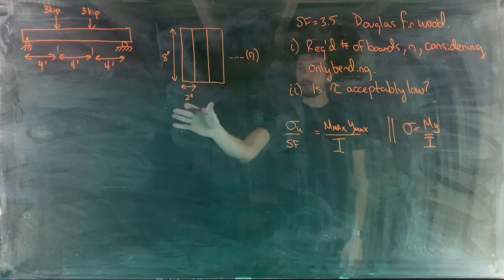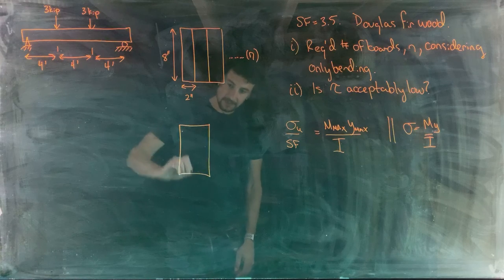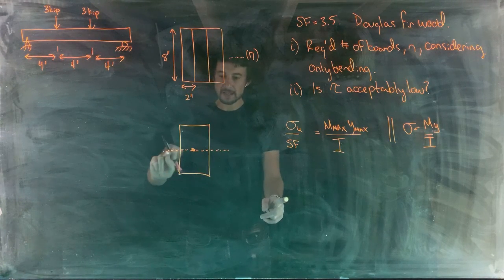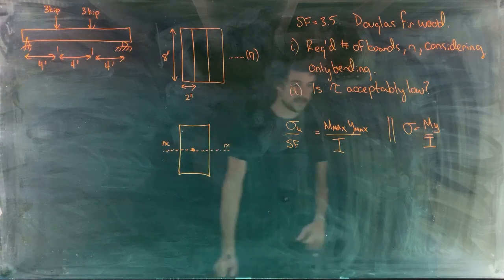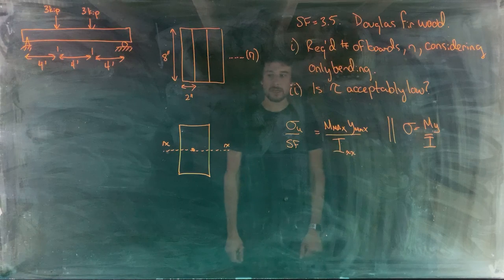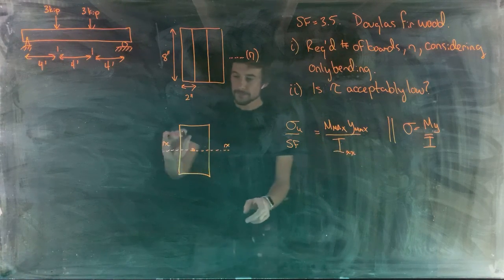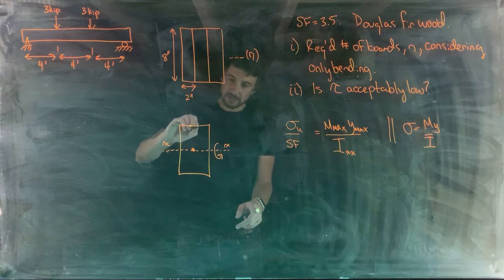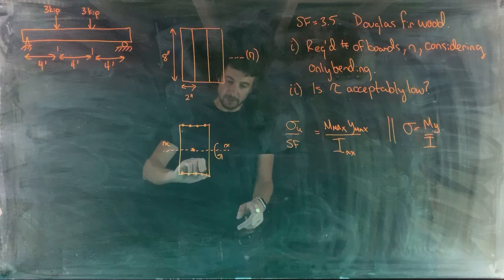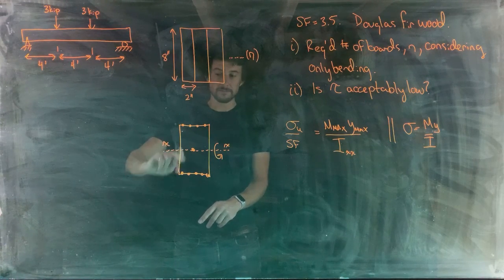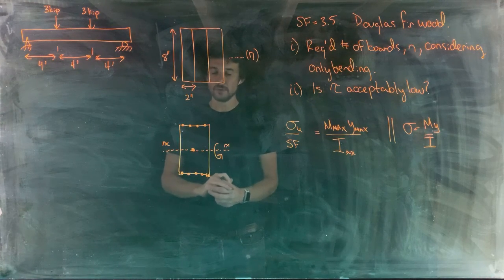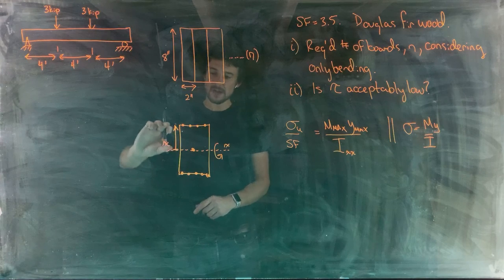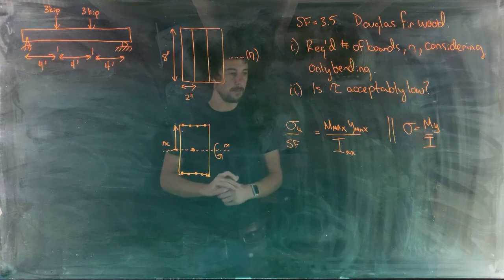For this rectangular beam, internal bending moments act about the horizontal centroidal axis x-x, so we want I_xx. The maximum bending stress occurs at the top or bottom of the cross section, and the distance from the bending axis to those points is the height of the cross section divided by two, so we know y_max.